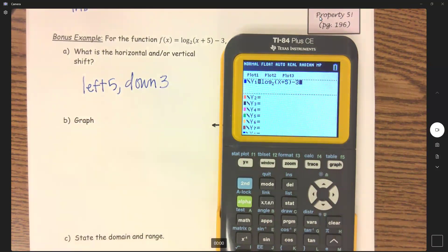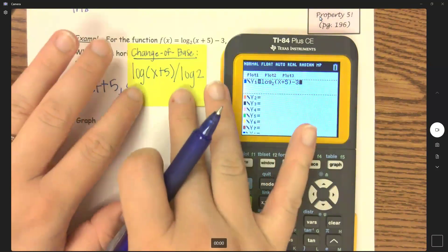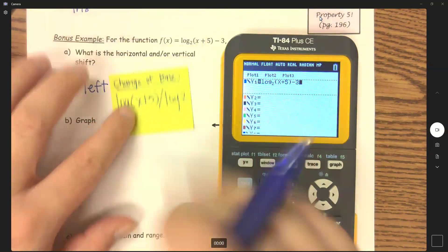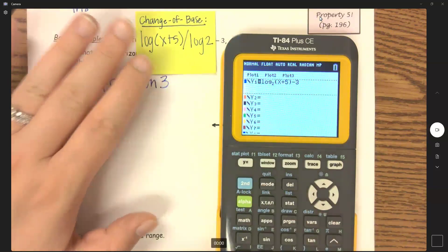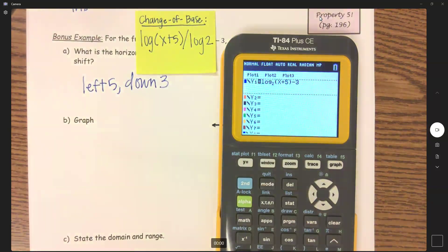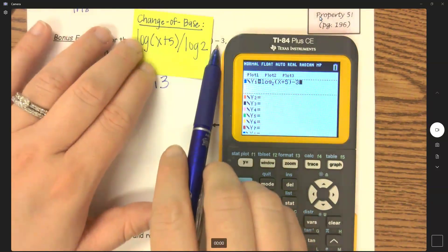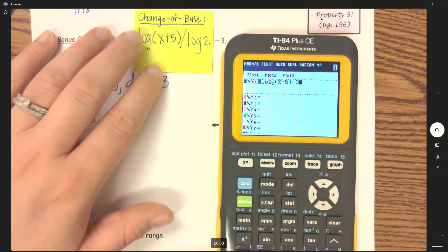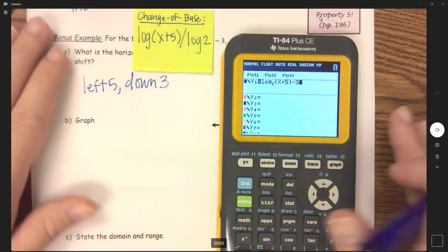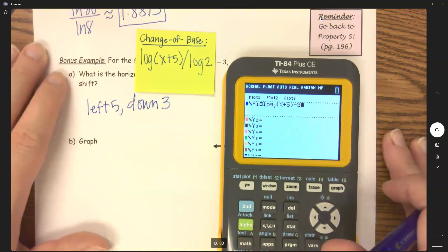If you have a TI-83, you have to use that change of base. So instead of being able to punch in log base two of x plus five, you have to do the log of x plus five divided by log of the base, log two, and then you'll include that minus three at the end. So if you are using that change of base, that's how you have to type it in.